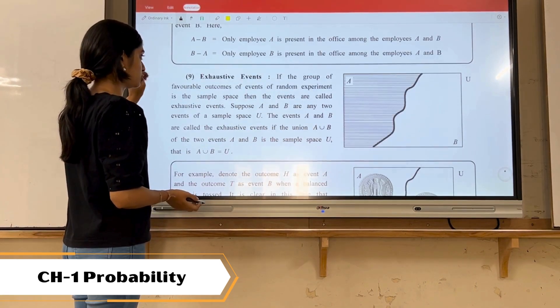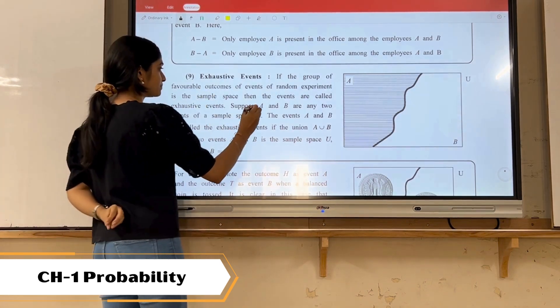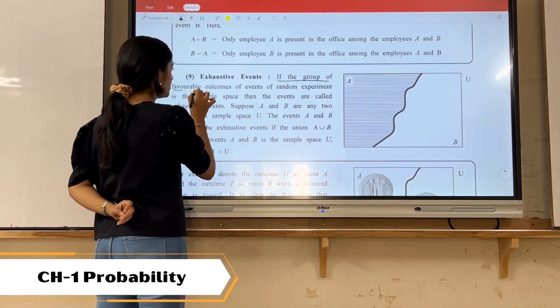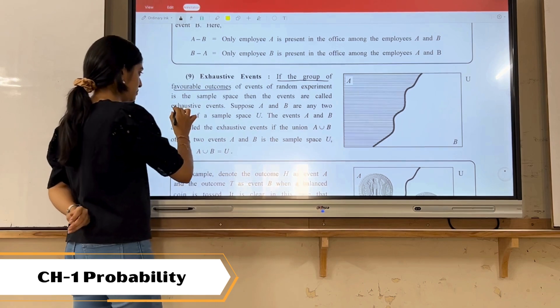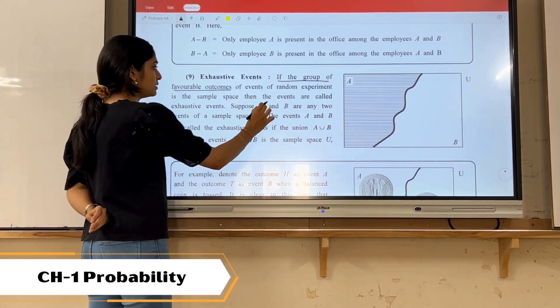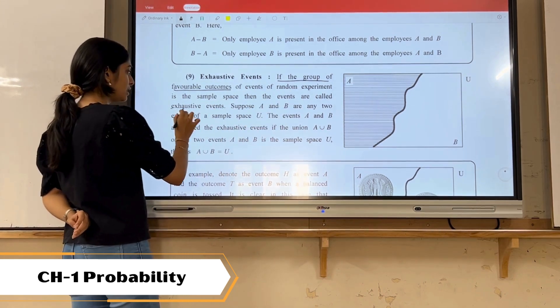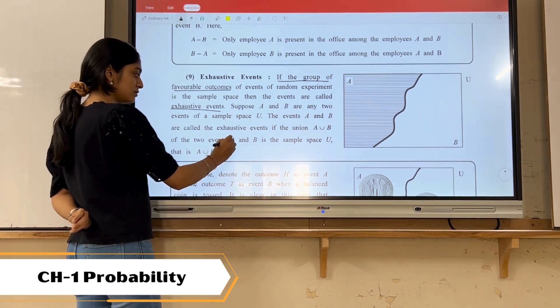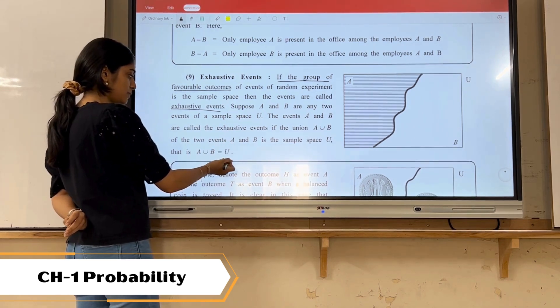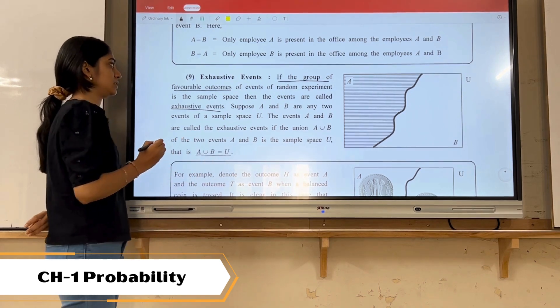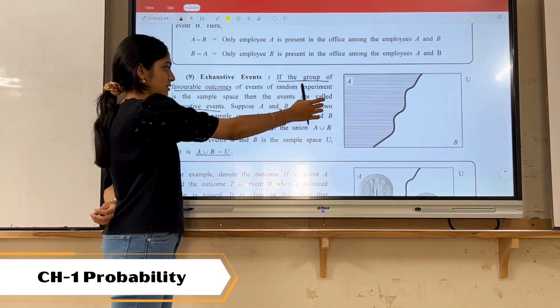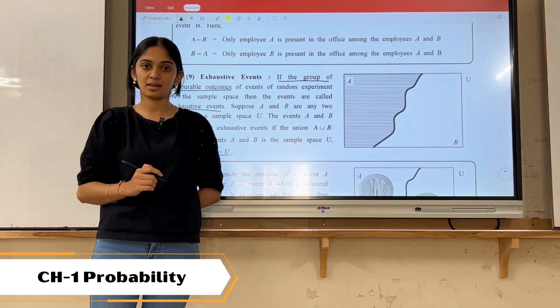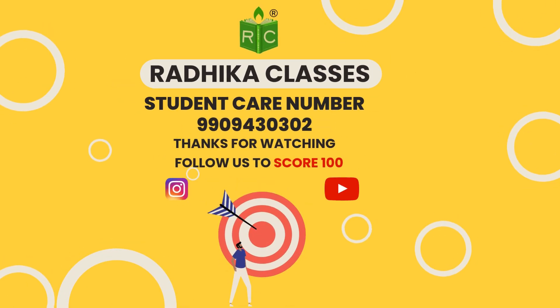And last is exhaustive event. Now if the group of favorable outcomes of an event of random experiment is the sample space, then the events are to be termed as exhaustive event. That means whenever A union B is equals to the sample space, then this type of events are termed as exhaustive event. This is the Venn diagram of exhaustive events. Thank you.